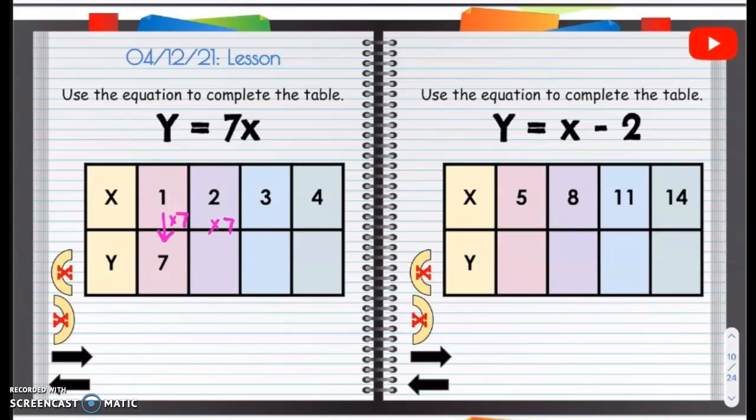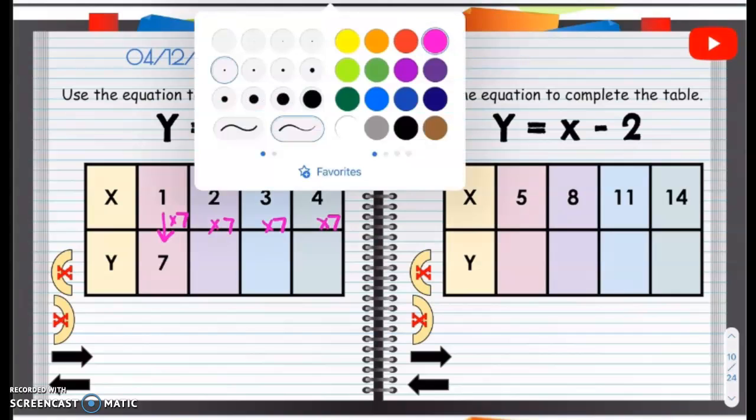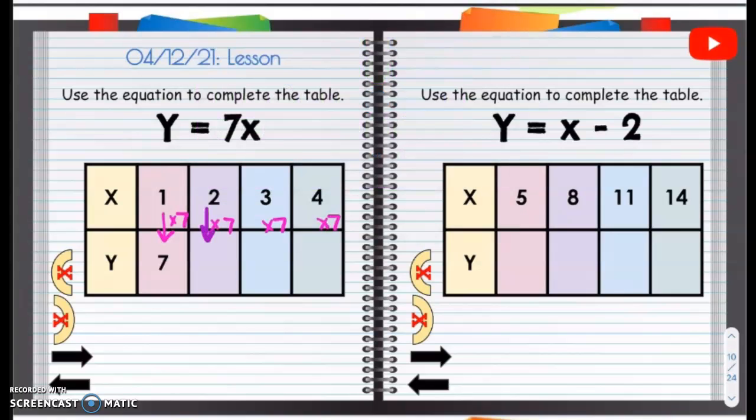Times 7, times 7, times 7. So 2 times 7 is going to be 14. Is 1 times 7, 7? Yes. 3 times 7 is going to be 21. 4 times 7, 28. So all you have to put in those boxes is that 14, 21, and 28.